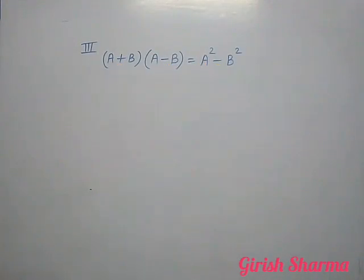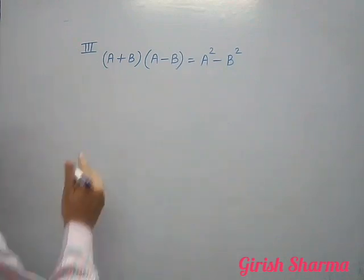Come on, the identity: A plus B times A minus B is equal to A square minus B square.